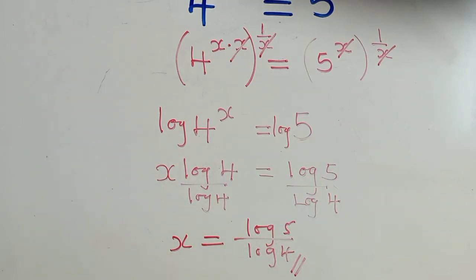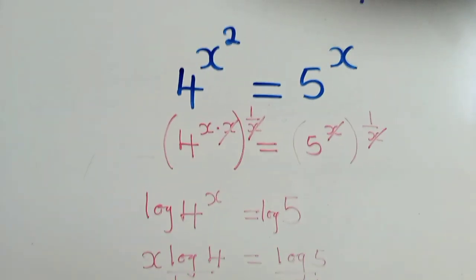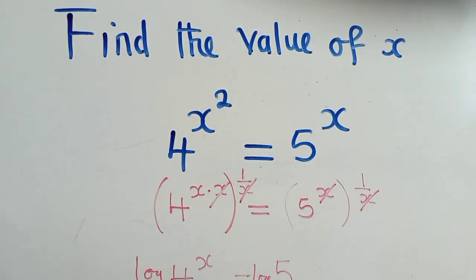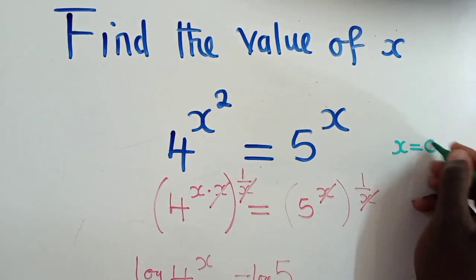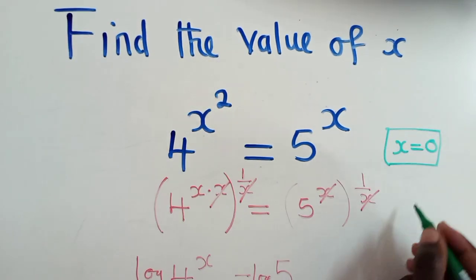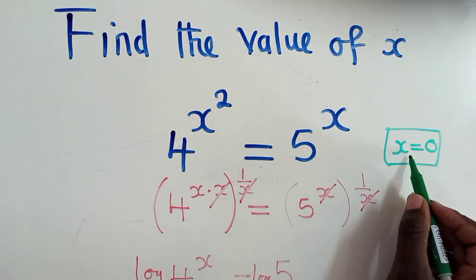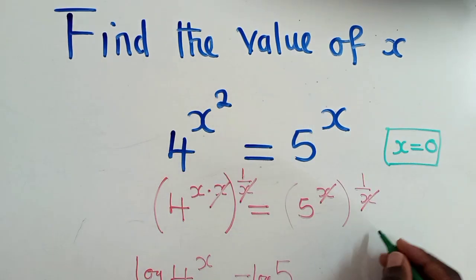All right, so now if you don't want to use this solution, you can just look, if you're able to see nicely, you can just say, okay, x is equal to 0. So when x is equal to 0, it's also a solution. Because if we put a 0 here and a 0 here,